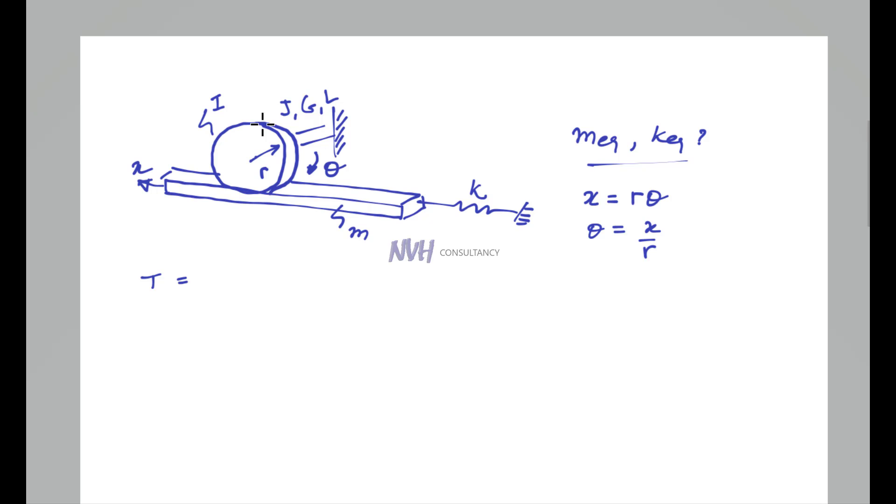The kinetic energy T is then equals to translational as well as rotational. For translational you have half M X dot square, plus rotational is half I theta dot square. You can write theta in terms of X: half M x dot square plus half I times X dot by R squared. This ends up as half times M plus I by R square times X dot square.